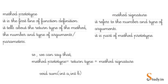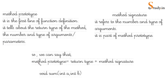Next, what is a method prototype and what is a method signature? A method prototype is the first line of a method definition. It tells us the return type of the method, and the number and type of arguments. For example: 'void sum(int a, int b)' — return type is void, method name is sum, two parameters both of type int.